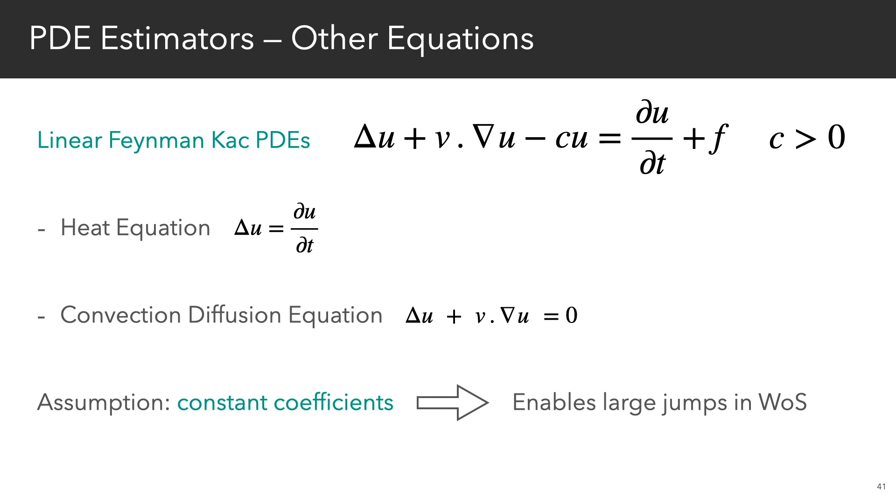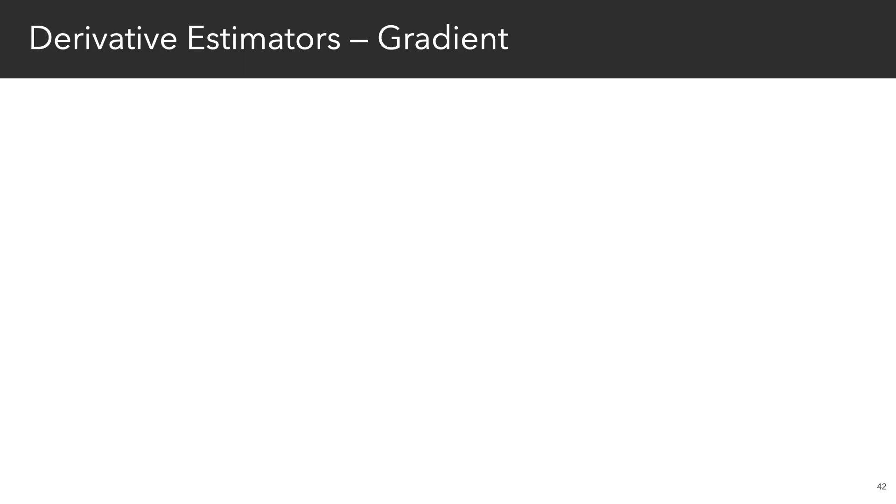Also notice that the walk-on spheres algorithm is able to take large jumps only because we assume constant coefficients here. And this is similar to the assumptions that are commonly made in rendering that rays travel in a vacuum.